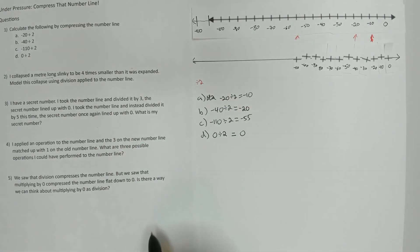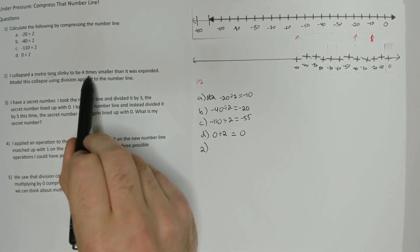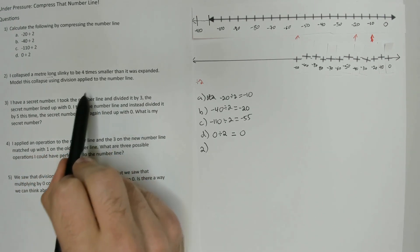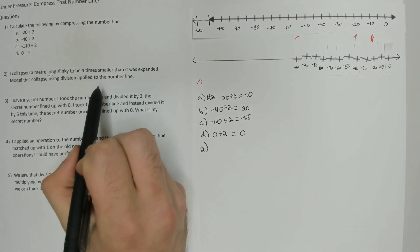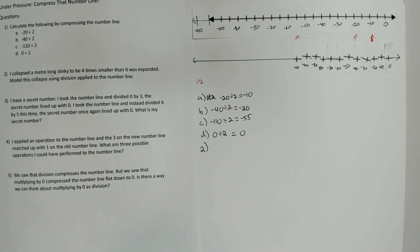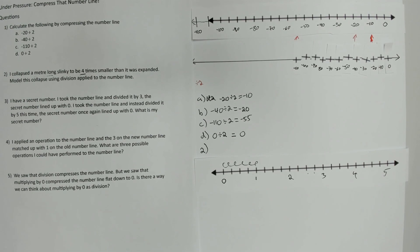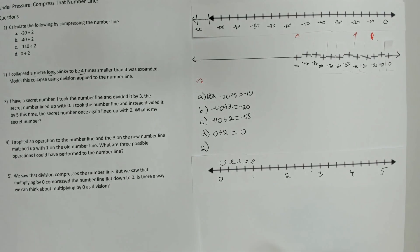These next ones are going to be a little more complicated. Question 2: I collapsed a meter-long slinky to be 4 times smaller than it was expanded. Model this collapse using division applied to the number line. The slinky is a meter long, and we need to collapse it to be 4 times smaller, which means we're going to be dividing the number line by 4. I take this number line, starting at 0, labeled with positive numbers only, and draw a slinky between 0 and 1.